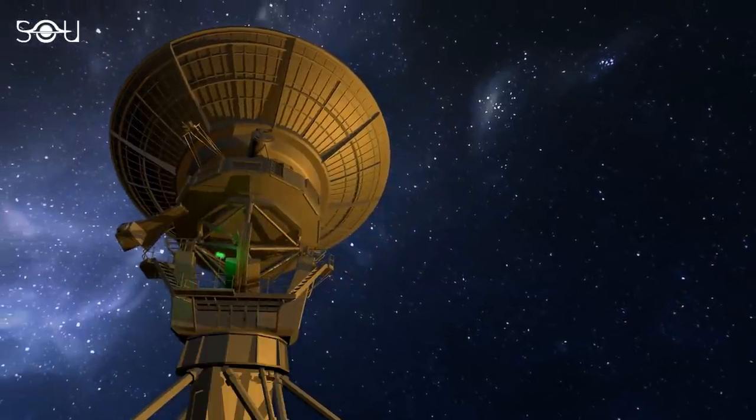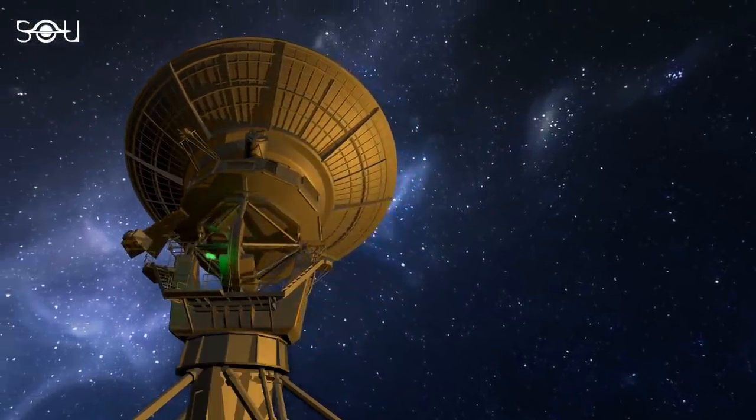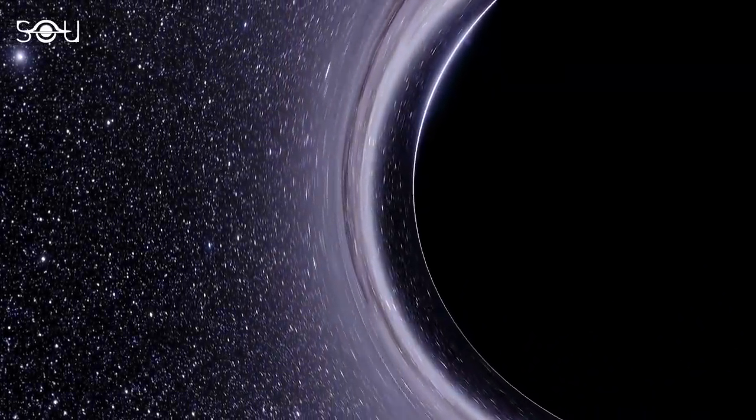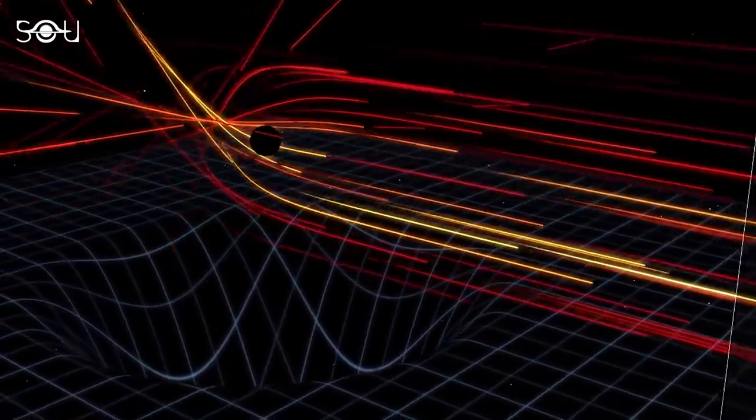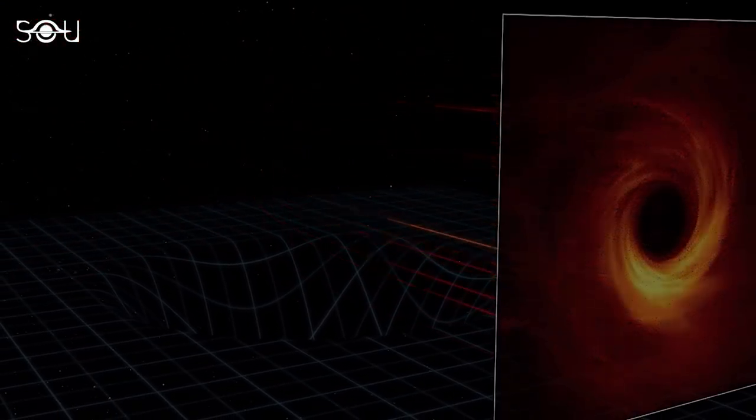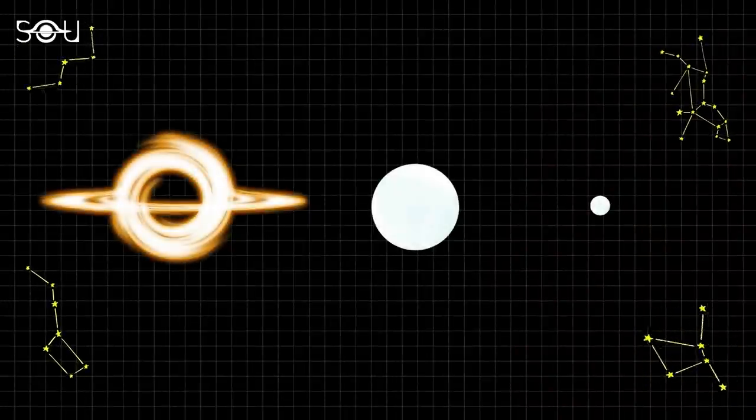Astronomers detect about 2,000 microlensing events in one year, and some of them are caused by black holes. But how do we know the difference? How can we say the foreground object is indeed a black hole? Well, there are two essential things that astronomers notice.